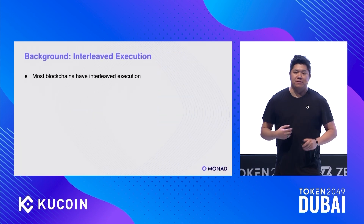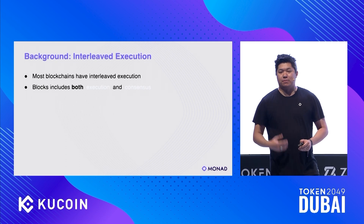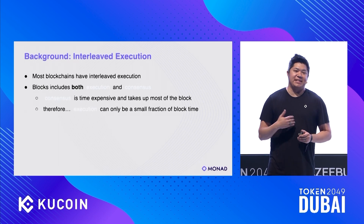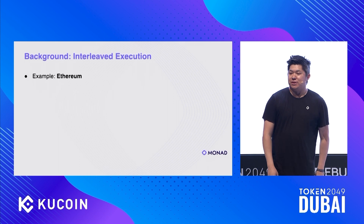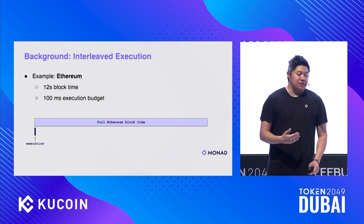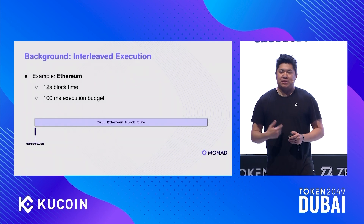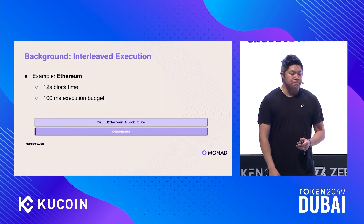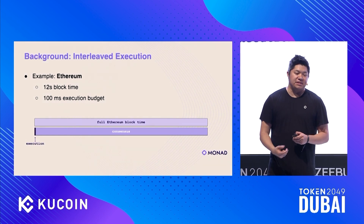So first, asynchronous execution. Blockchains mostly have interleaved execution — consensus and execution are interleaved. Because consensus is quite expensive, it takes up most of the block time, and execution can only be a small portion. Take Ethereum for example: Ethereum has 12 second block times, but in practice the actual execution budget is only 100 milliseconds. That's literally only 1% of the total block time — similar to the idea that you only use 10% of your brain.